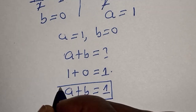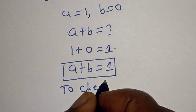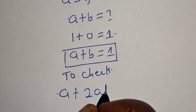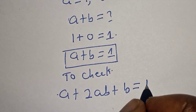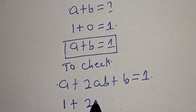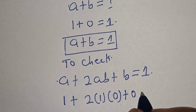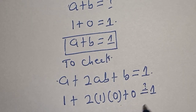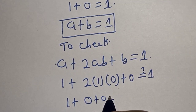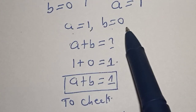We can check to confirm if our answer is correct. Substituting into the given equation: a plus 2ab plus b must equal 1. With a equals 1 and b equals 0: 1 plus 2 times 1 times 0 plus 0 equals 1 plus 0 plus 0, which equals 1. This satisfies the given equation.